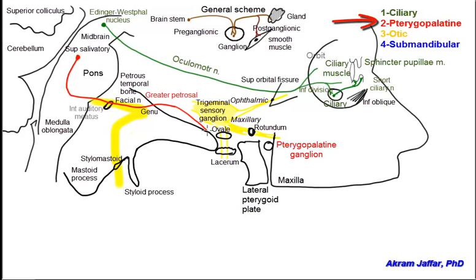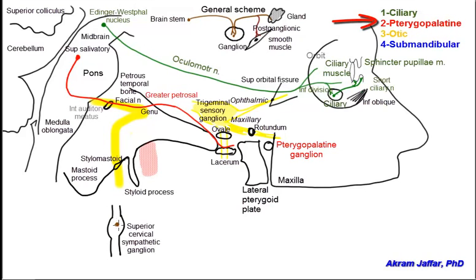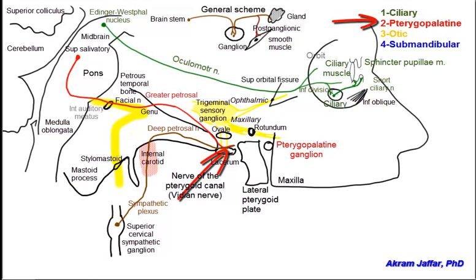At the foramen lacerum, the greater petrosal nerve is joined by the deep petrosal nerve, which is formed by postganglionic sympathetic fibers whose cell bodies are in the superior cervical ganglion. These fibers leave the superior cervical ganglion and form a plexus around the internal carotid artery. The internal carotid artery carries them into the petrous temporal bone, where some fibers from this plexus join the greater petrosal nerve to form the vidian nerve, or nerve of the pterygoid canal, at the foramen lacerum. The foramen lacerum is closed in life by fibrous tissue and only allows passage of emissary veins.